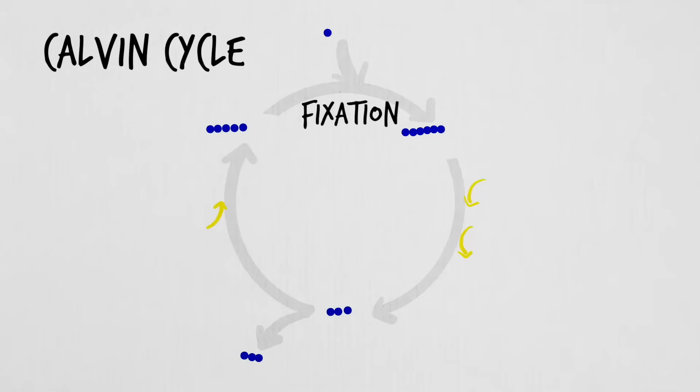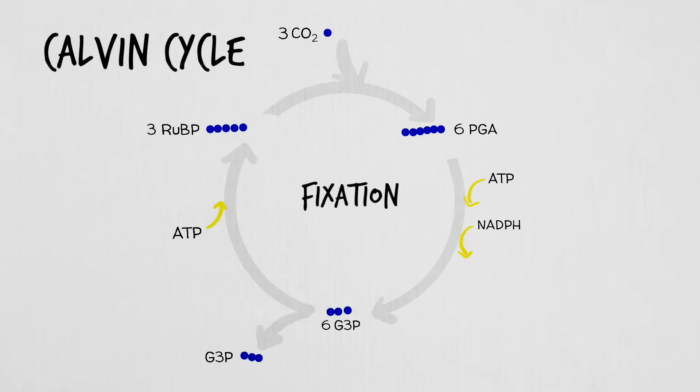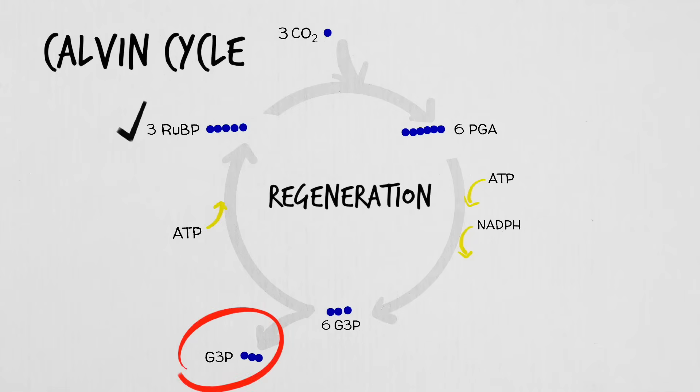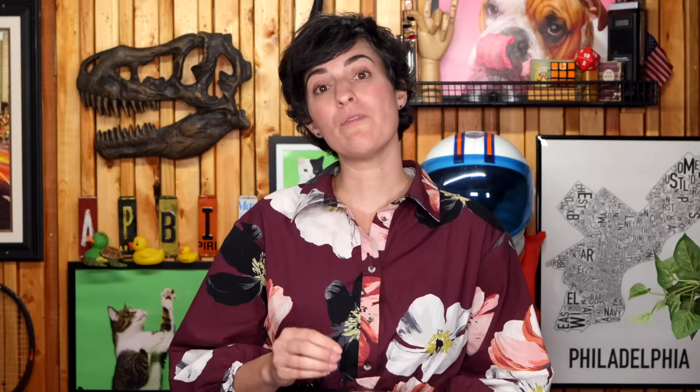The Calvin cycle takes place in the stroma and uses CO2 to build carbohydrates, powered by ATP and NADPH from the light reactions. It has three phases: fixation, reduction, and regeneration. During fixation, CO2 attaches to a 5-carbon molecule, RuBP, to form a short-lived 6-carbon intermediate that splits into two 3-carbon molecules. In reduction, those 3-carbon molecules are rearranged into G3P using energy from ATP and electrons from NADPH. Lastly, regeneration: some G3P exits the cycle to form sugars, while the rest regenerates the original 5-carbon molecule so the cycle can continue. The G3P made here can go on to form glucose or other biological molecules through dehydration synthesis. So in short, light reactions capture energy, build ATP and NADPH, and release oxygen. Then the Calvin cycle cashes in that energy to build sugars that fuel life.